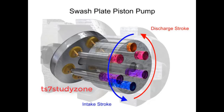Piston pumps, in general, are manufactured with closer internal fits than other pumps. This means that internal slippage can be less, so that they operate with reasonable efficiency at pressures both too high or too low for the operation of other pumps.